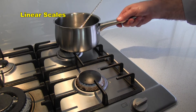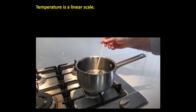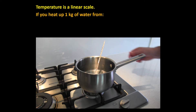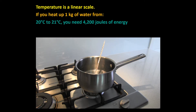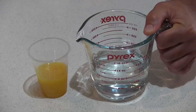In contrast, linear scales are probably what we're more used to. Temperature is a linear scale. If you heat up one kilogram of water from 20 degrees Celsius to 21 degrees Celsius, you need 4,200 joules of energy. To then go from 21 degrees Celsius to 22 degrees Celsius, you need another 4,200 joules of energy, and so on. Equal amounts of energy input create equal changes in temperature.